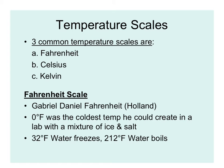Fahrenheit was developed by Gabriel Daniel Fahrenheit, who was Dutch, from the Netherlands. Zero on the Fahrenheit scale was the coldest temperature he could create in a laboratory with a mixture of ice and salt. On the Fahrenheit scale, 32 degrees Fahrenheit is the freezing point of water, and 212 degrees Fahrenheit is the boiling point. So we know that if it's 32 degrees outside, there's a chance we might have a snow day.